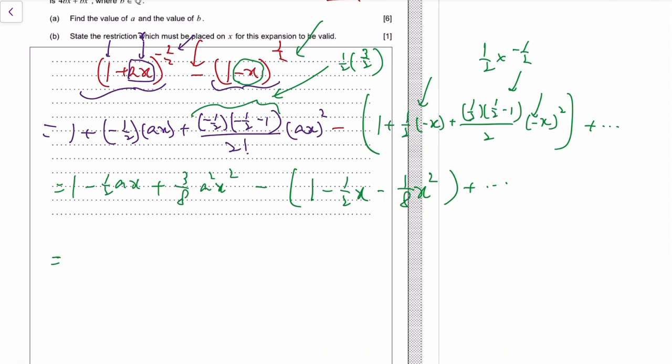And then 1 minus 1 is zero. Negative half a minus negative half x, so it's negative half a plus half x. That's the x terms, x minus x is the x term.